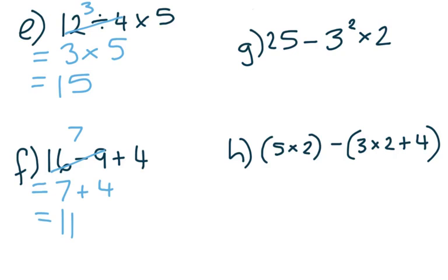Part G, we've got a power, a subtraction and a multiplication. So in our BIMDAS indices come first. So the first step would be to work out what that is. So that's 3 squared which is 9, 3 times 3. So we would have 25 take away 9 times 2.